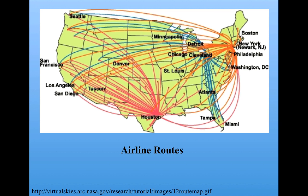Perhaps the most familiar kind of network is a map of airline routes. Here we have a particular airline whose hubs are clearly Houston and Newark. Each node is a city and each link means that there's a flight on this airline between the two cities. There are many cities that have few flights coming out of them and some small number of cities that have many flights coming out of or into them. Again, this shows us the importance of these hubs.